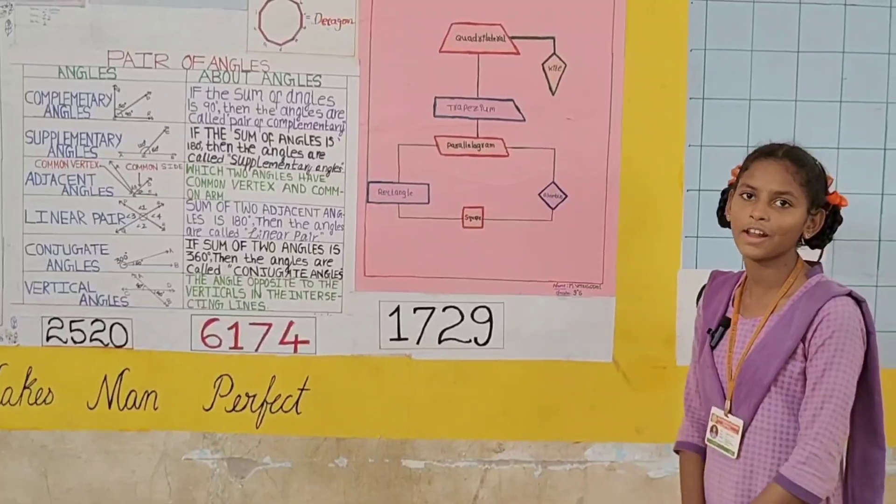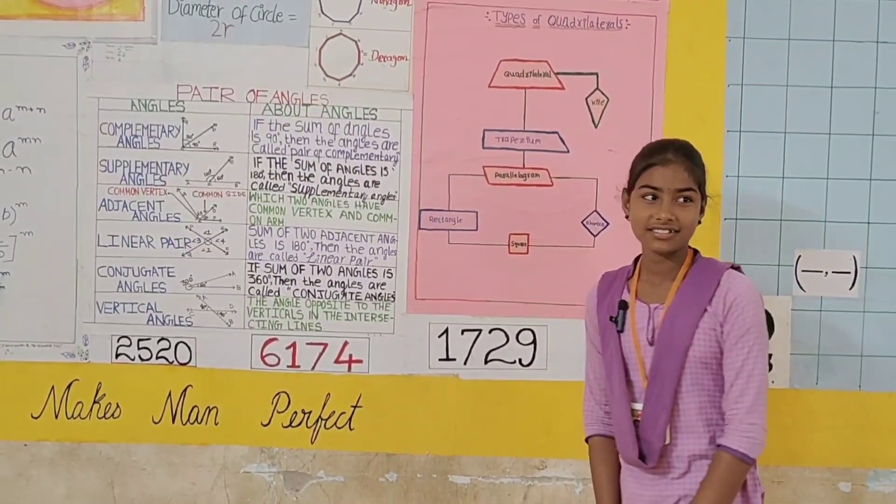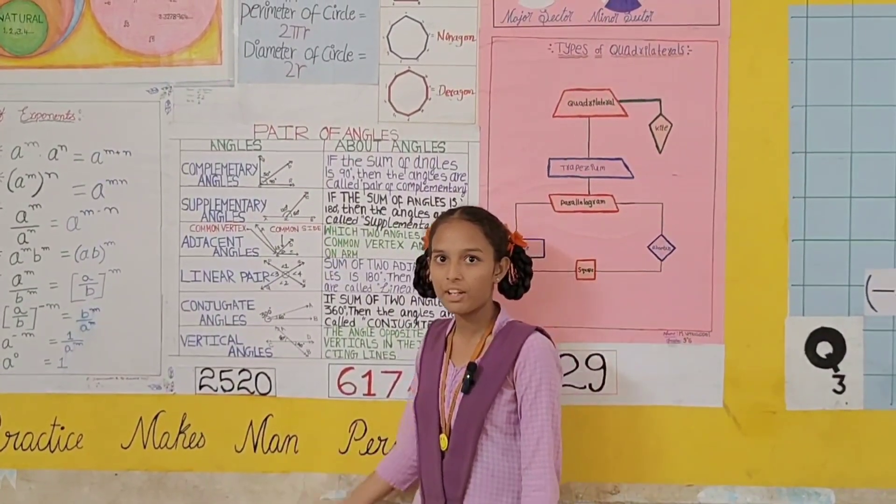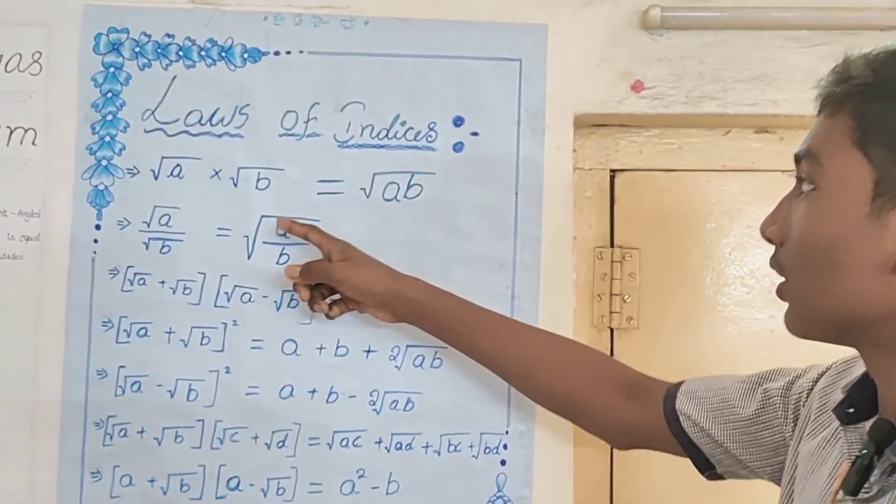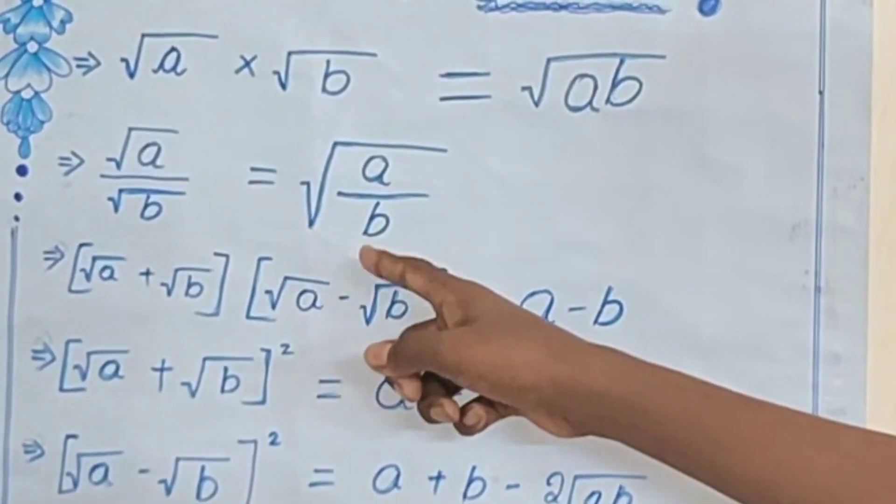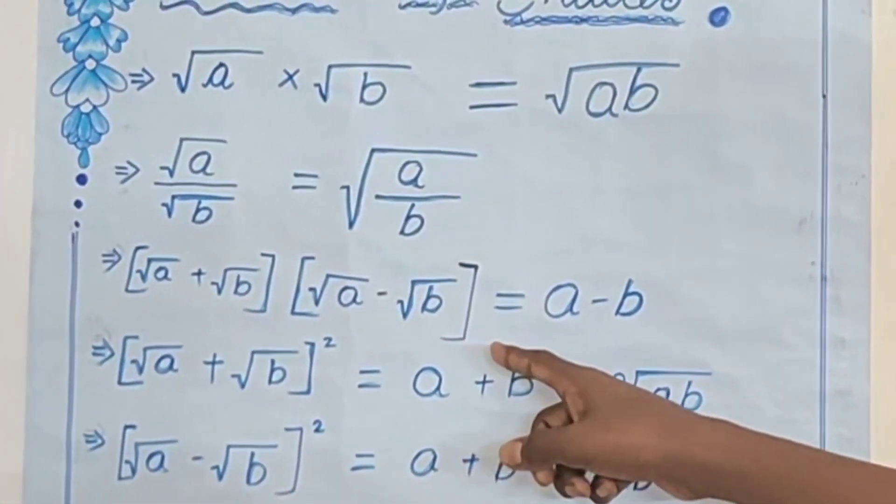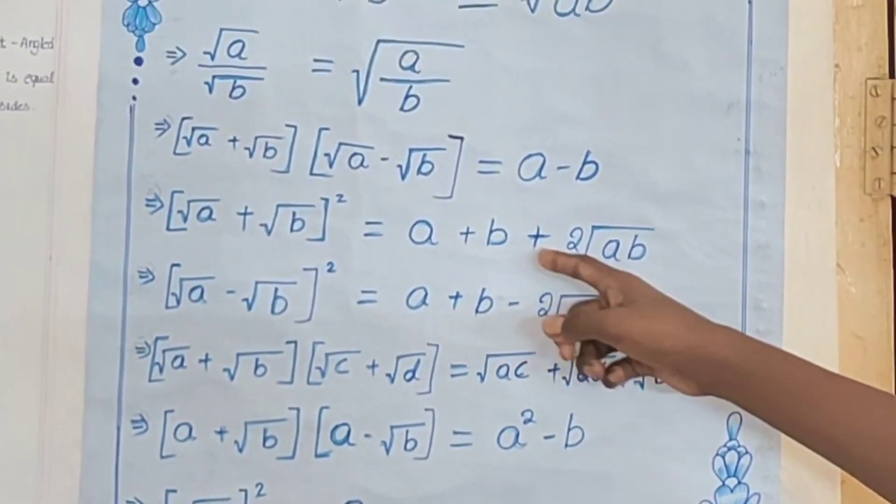1729, this is Ramanujan number. 6174, this is Kaprekar's constant. 2520, this is the smallest number divisible by 1 to 10. Laws of indices: root A into root B is equal to root AB. Root A by root B is equal to root A by B. Root A plus root B into root A minus root B is equal to A minus B. Root A plus root B whole square is equal to A plus B plus 2 root AB.